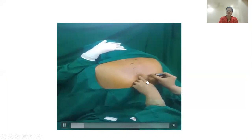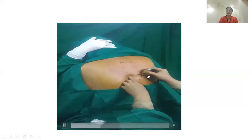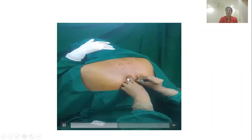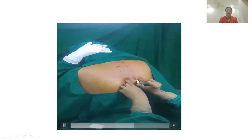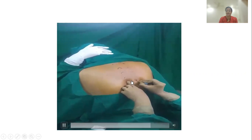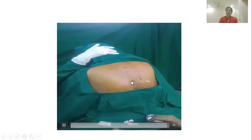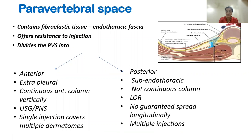This shows how I hit the transverse process — entering at three centimeters from the superior aspect of the spinous process on the ipsilateral side. After hitting the transverse process and walking off either caudad or cephalad, you enter the paravertebral space after piercing the superior costal transverse ligament. The paravertebral space contains fibroelastic tissue which divides it into posterior and anterior compartments. The anterior compartment is closer to the pleura. It is a continuous column longitudinally, so a single injection covers multiple dermatomes. In PNS-guided technique, the dorsal rami continuing into the intercostal nerve is stimulated, producing intercostal muscle contraction.